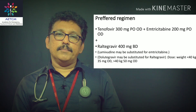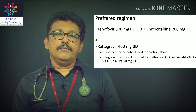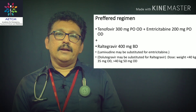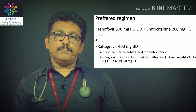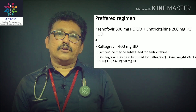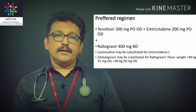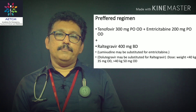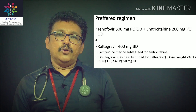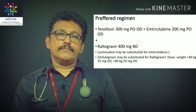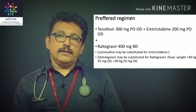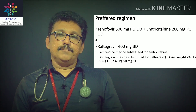The preferred PEP regimen is: Tenofovir 300 mg orally once daily, plus Emtricitabine 200 mg orally once daily, plus Raltegravir 400 mg orally twice daily. Lamivudine can be substituted for Emtricitabine, and Dolutegravir can be substituted for Raltegravir.